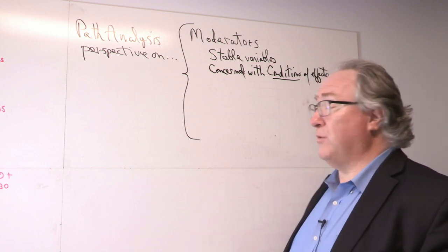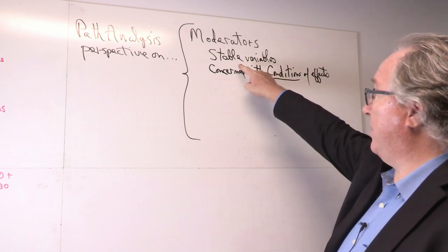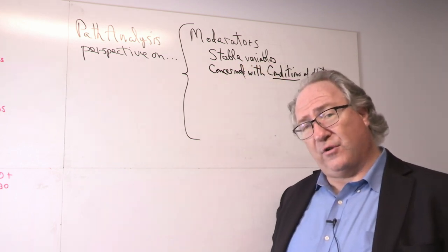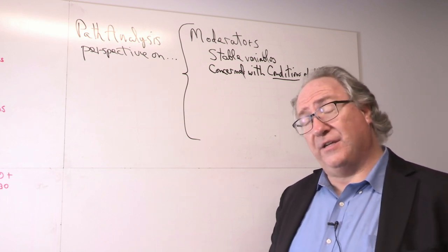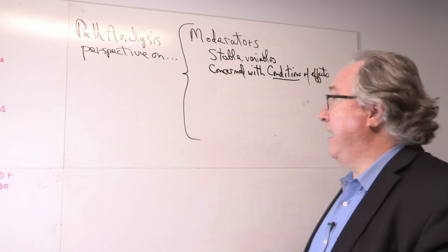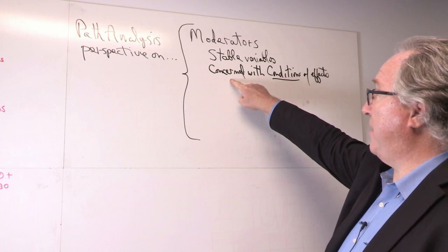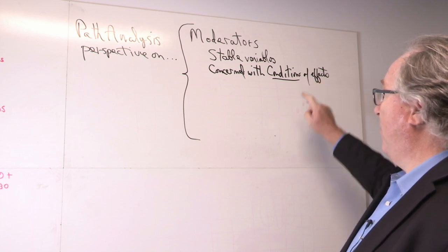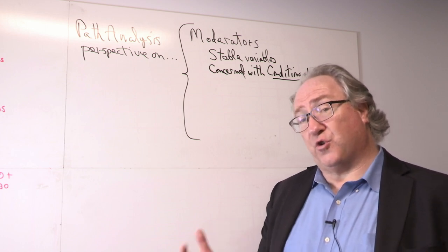Generally speaking, moderators are stable variables — variables whose presence and level is considered to sustain itself over time and not to be subject to the effects of other variables. When we do tests of moderation, we're concerned with conditions of effects, or the conditions under which effects occur or don't occur, or occur at different strengths.